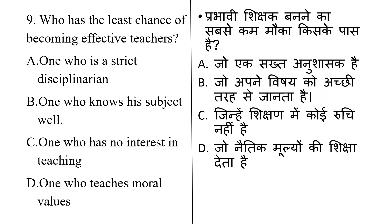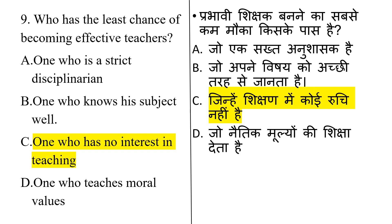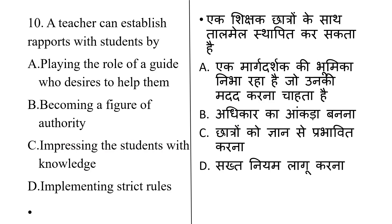Who has the least chance of becoming an effective teacher? Options are: one who is a strict disciplinarian, one who knows his subject well, one who has no interest in teaching, one who teaches moral values. The correct answer is Option C: one who has no interest in teaching — without interest, one cannot become an effective teacher.